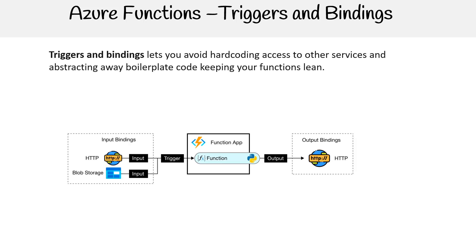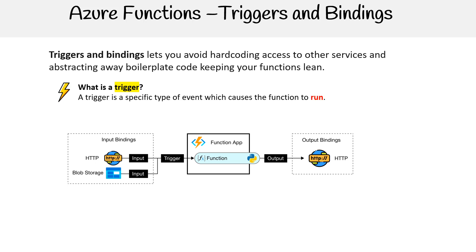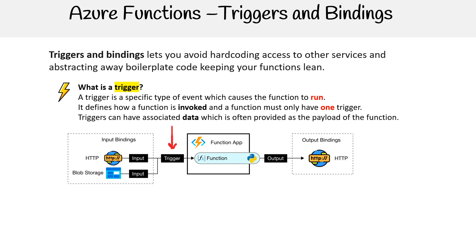Here is our graphic which represents a function. We have input bindings, output bindings, and a trigger. So what is a trigger? A trigger is a specific type of event which causes the function to run. It defines how a function is invoked, and a function must only have one trigger. Triggers can have associated data, which is often provided as the payload of the function.